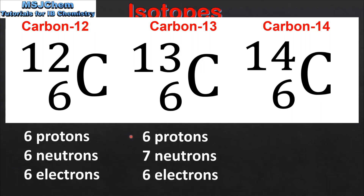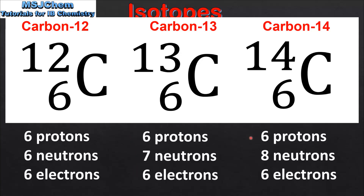Next we have the isotope carbon-13, which has 6 protons, 7 neutrons and 6 electrons. And finally on the right we have the isotope carbon-14, which has 6 protons, 8 neutrons and 6 electrons. So from this we can see that each isotope has the same number of protons but a different number of neutrons.